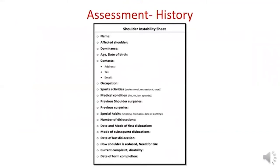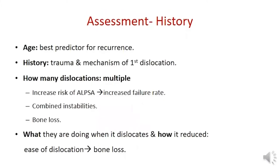When evaluating a patient with instability, it is critical to obtain an accurate history. Key questions include: history of trauma and mechanism of dislocation; number of dislocations, as multiple dislocations increase risk of ALPSA, combined instabilities, and bone loss; and how easily it dislocates, as ease of dislocation suggests bone loss.